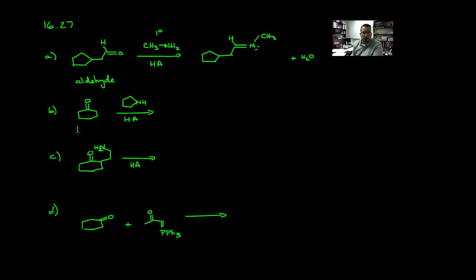In part B, we're starting with a ketone, and in this case we're treating with a secondary amine. This happens to be a cyclic amine. Because the amine is secondary, we end up with an enamine.